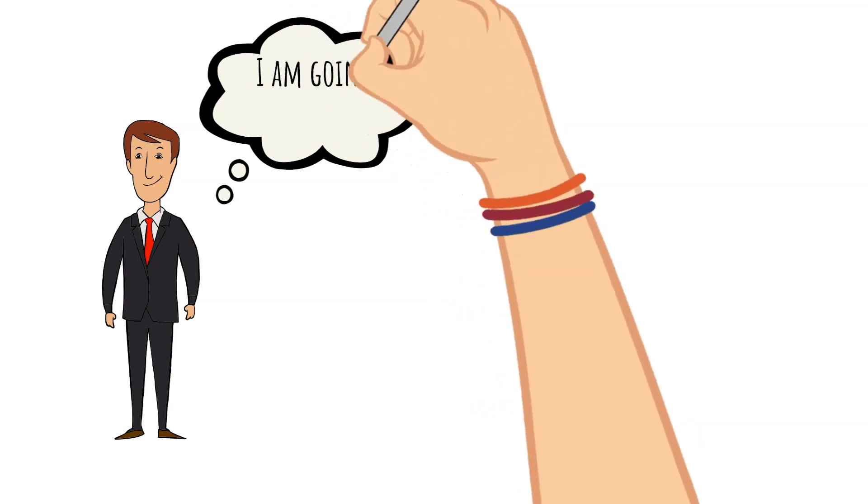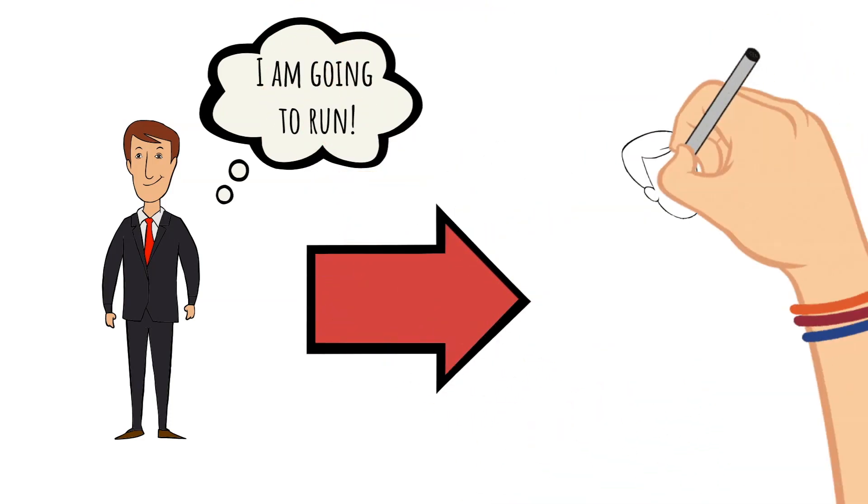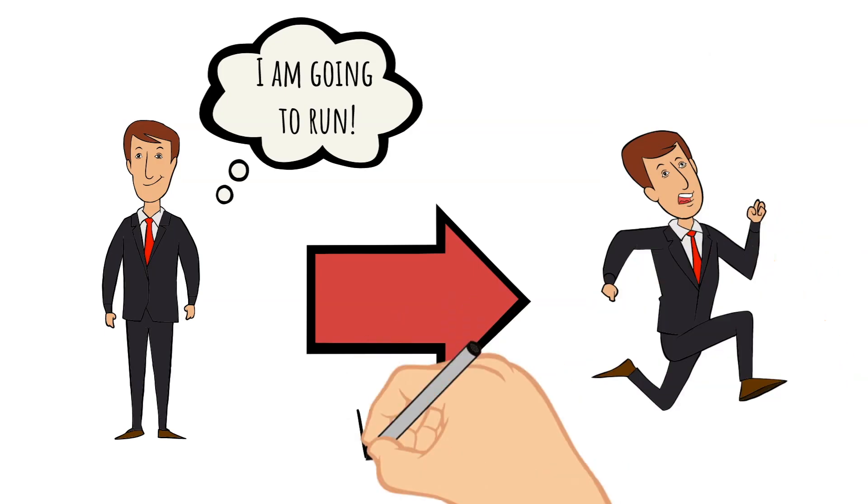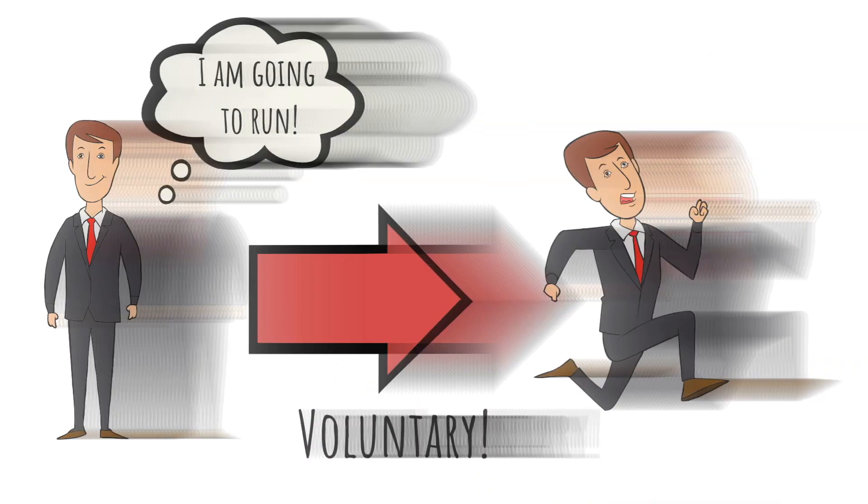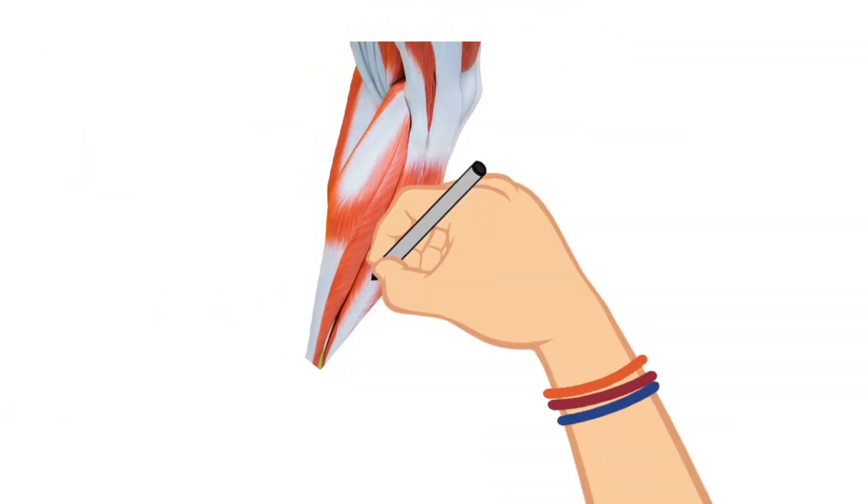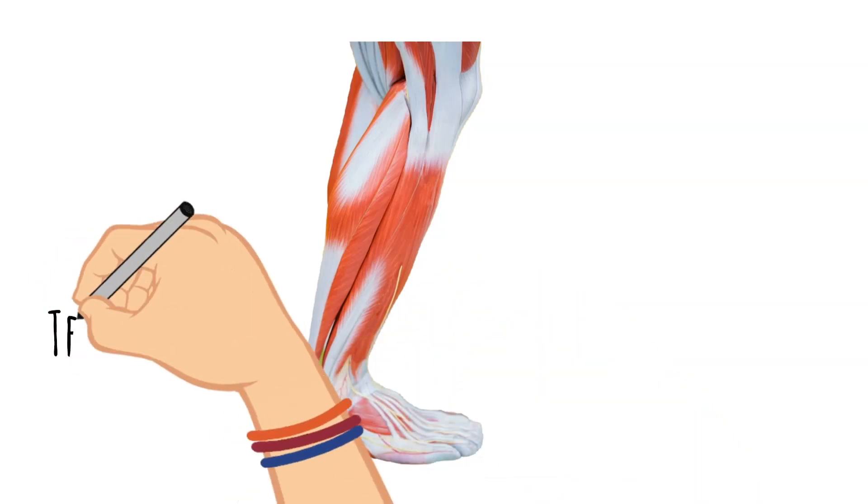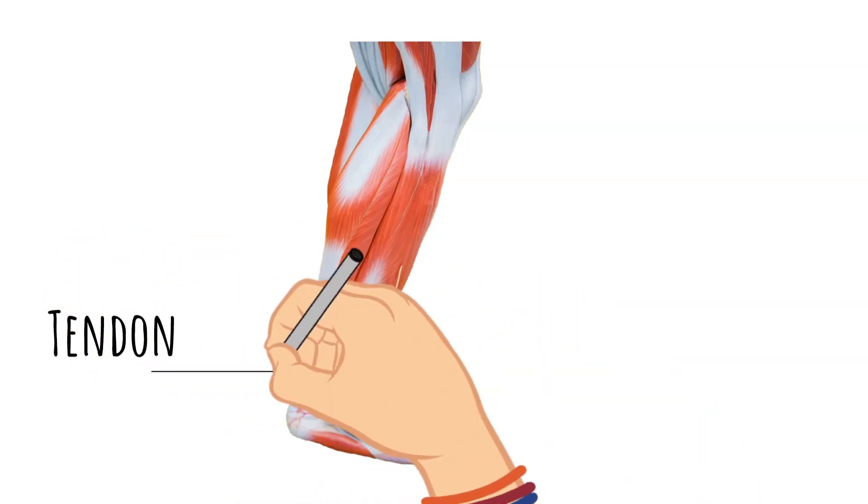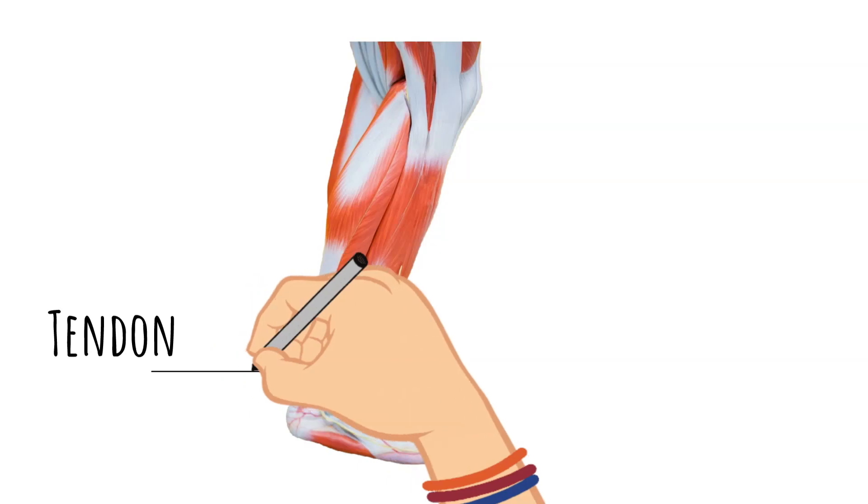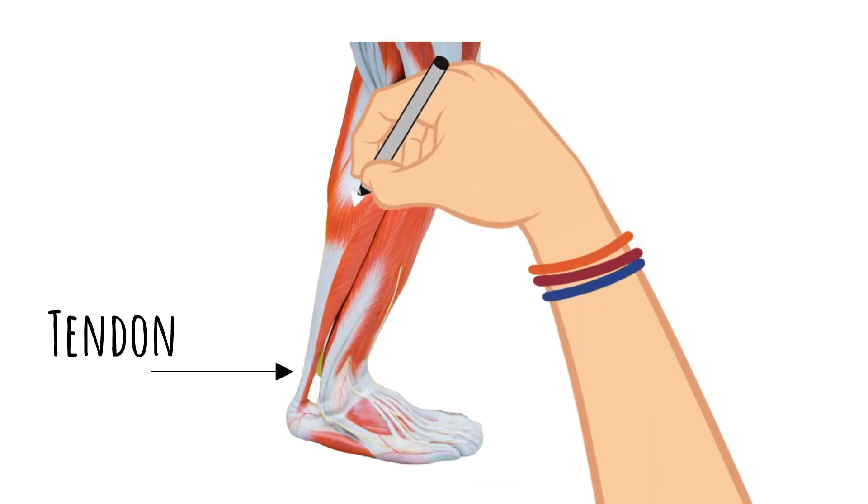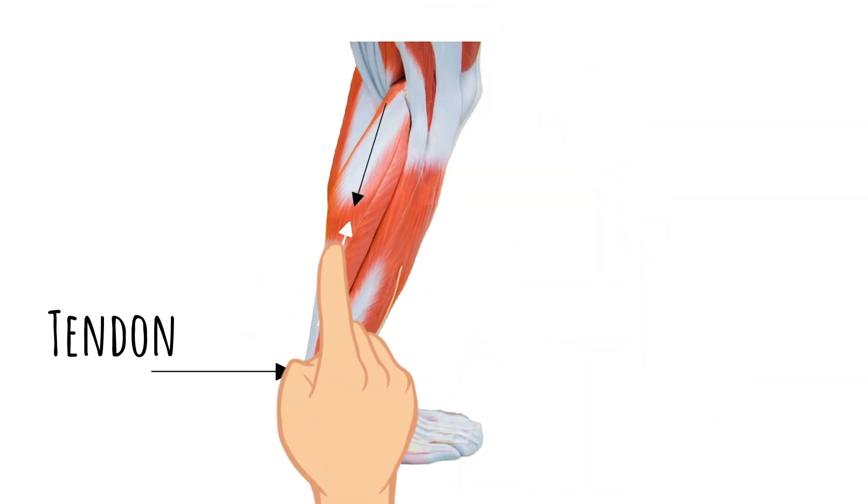Cord-like structures called tendons connect skeletal muscle to the skeleton. As skeletal muscle tightens or contracts, the muscle gets shorter.